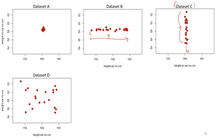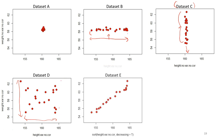Dataset D is different from A, B, and C because this time both variables vary — the values for body height and body weight between the points are very different from each other. But do they vary together at a similar trend? How about datasets E and F?